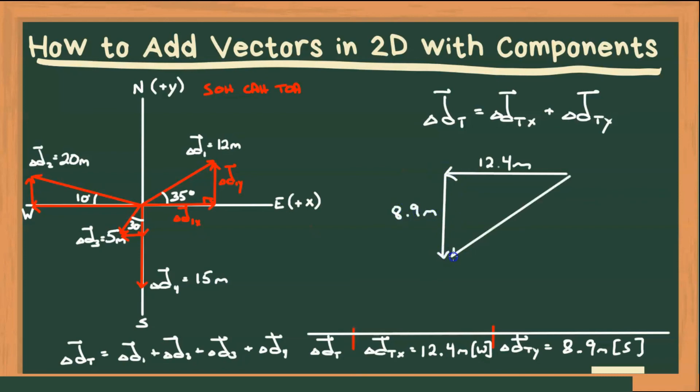And therefore our total displacement is going to be the hypotenuse of a simple right-angle triangle. Now since this is a vector, I need to solve for its length and its direction. So I can solve for its magnitude by using the Pythagorean theorem. So it's going to be the square root of 12.4 squared plus 8.9 squared, which gives us a value of 15.3 meters.